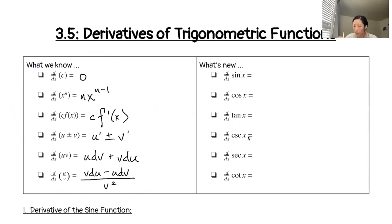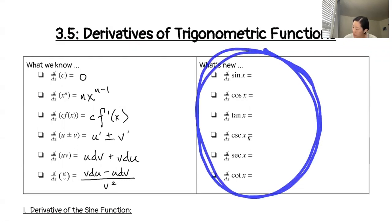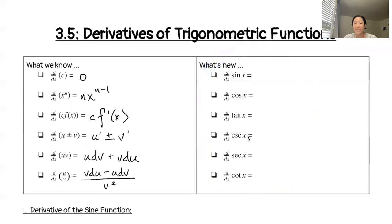And so those are all the rules that we know so far. I would encourage you to practice these, look up other examples of finding derivatives, and just get in as much practice as you can. All right, so what's new? All of this stuff: derivative of sine, cosine, tangent, cosecant, secant, and cotangent — that's what we're going to be able to fill in by the end of class today.